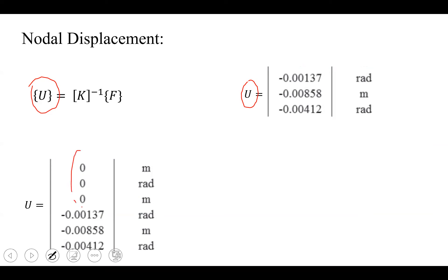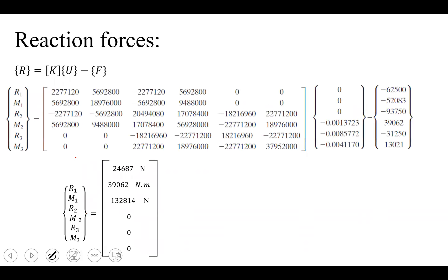The last three nodal values, written in global format, include the three zeros for the fixed degrees of freedom. Now that we have the complete nodal displacement vector for the whole model, we can find reaction forces using R = KU minus F, writing K in the unreduced format. The first three reactions (where nodal displacements are zero) give us the reaction force and reaction moment (in Newton-meters) at node one and the reaction force at node two. Positive values correspond to the positive Y direction and counterclockwise for moments.